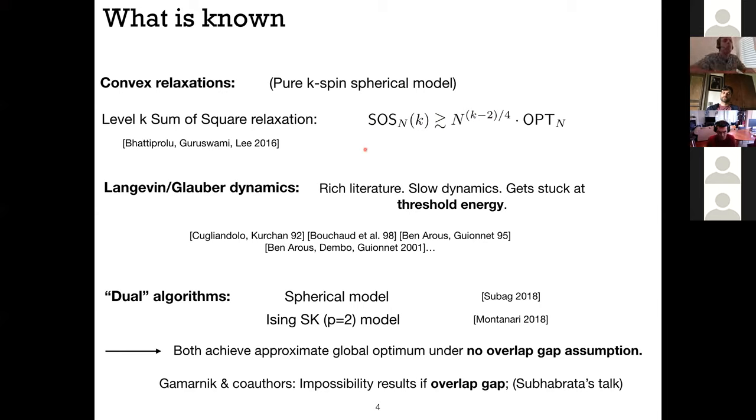You can look at Langevin/Glauber dynamics. So there's a rich literature, but in the glass phase these dynamics exhibit slow mixing and they get stuck at what's called the threshold energy. Thirdly there is another approach that was presented two days ago. So these I call them dual algorithms for a reason that will become clearer. For the spherical model we've seen an algorithm by Subhabrata, then Andrea Montanari tried to extend this approach to the Ising case for the two-spin model, and these both achieve, you can show that they both achieve a global optimum or an approximate global optimum under this condition that is called no overlap gap. We've seen from Subhabrata's talk what that means. If you assume that there is no overlap gap, that actually implies the existence of an algorithm. So this theme has been also investigated by many authors, coauthors of David Gamarnik, that show impossibility results if this condition is not satisfied.